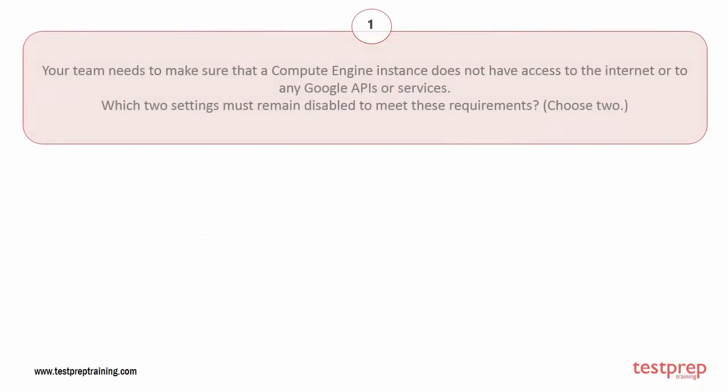Question number one: your team needs to make sure that a Compute Engine instance does not have access to the internet or to any Google APIs or services. Which two settings must remain disabled to meet these requirements? Choose two.